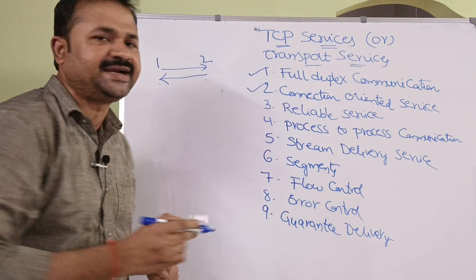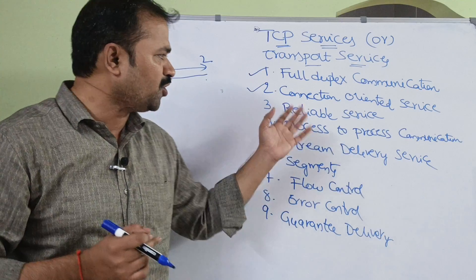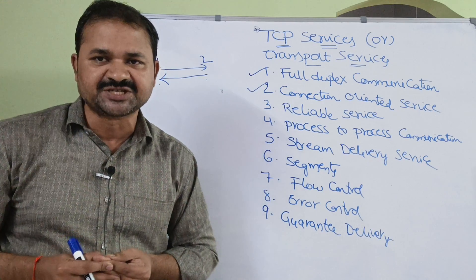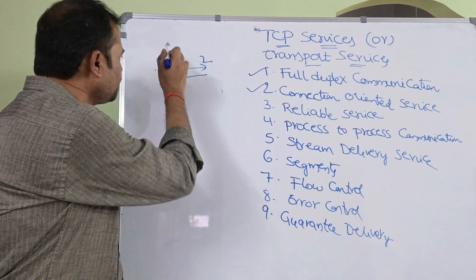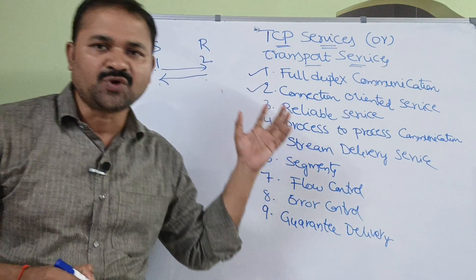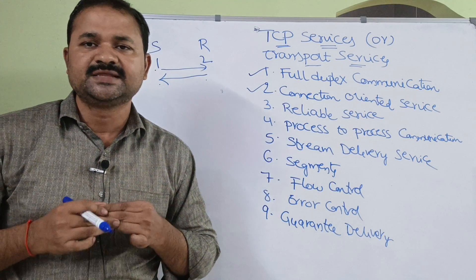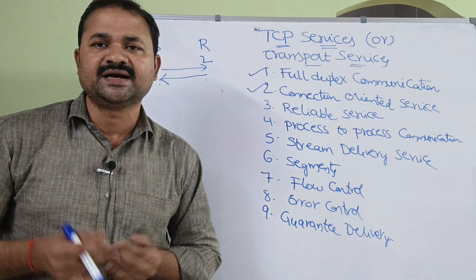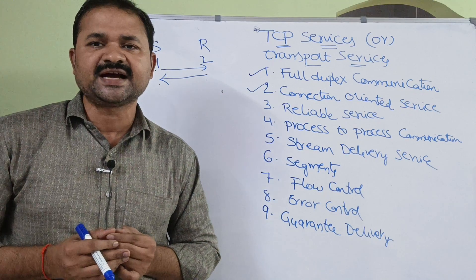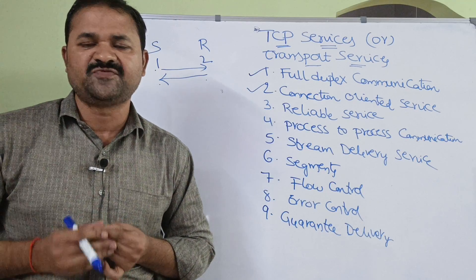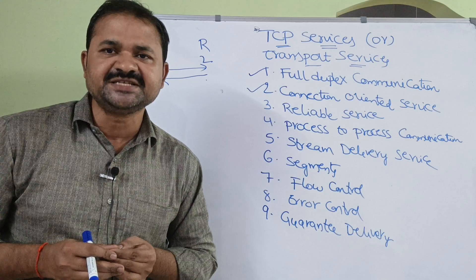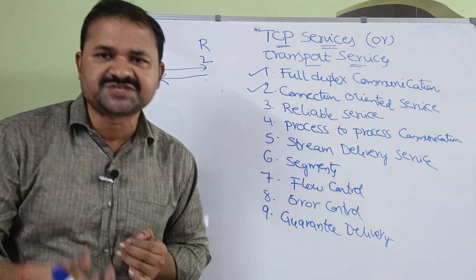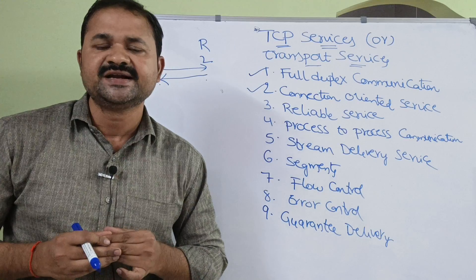The next one is connection oriented service. TCP follows connection oriented service. First, a connection will be established between host 1 and host 2 — between the sender and the receiver. After establishing the connection, the data will be transferred. Once the transferring of data is over, the connection will be terminated. The connection involves three phases: first, establishing the connection using a three-way handshake; second, transferring of data; and third, terminating the connection.